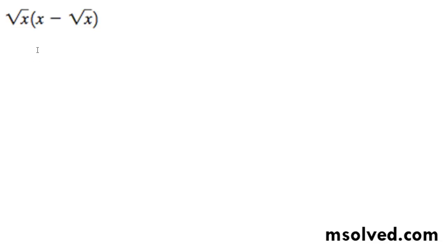Square root of x times x minus square root of x. Alright, so doing this, we multiply, we distribute out, so it multiplies out like this.